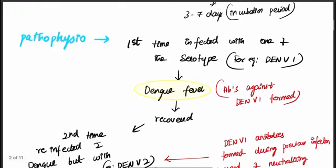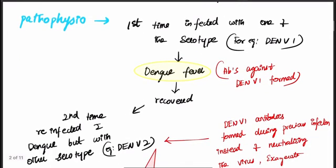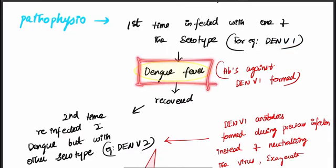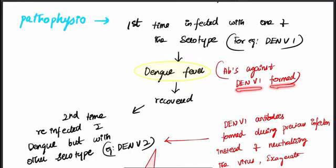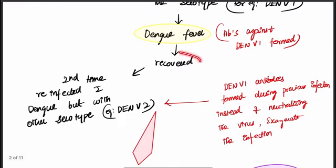Regarding pathophysiology — when a person is first affected with one of the serotypes, for example DEN V1, that is called Dengue fever. Because of that infection, antibodies are formed against that particular serotype, DEN V1. After recovery from the first infection, if he gets infected a second time with another serotype, this is called secondary infection.